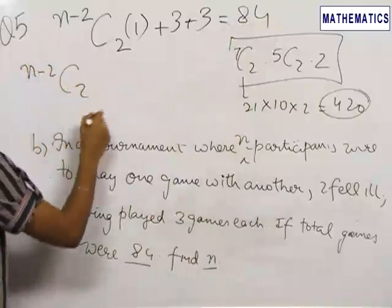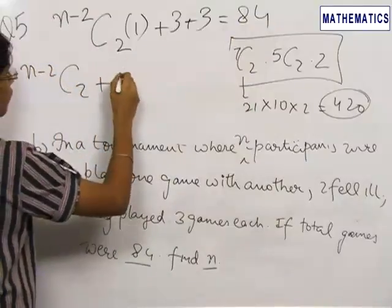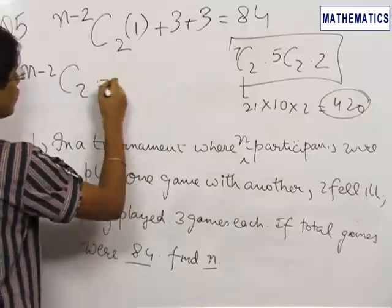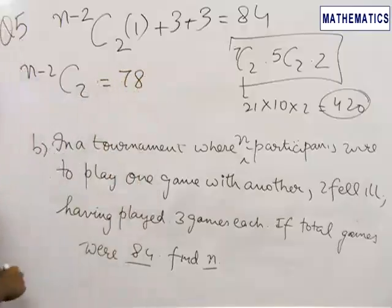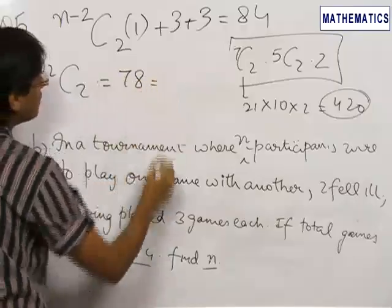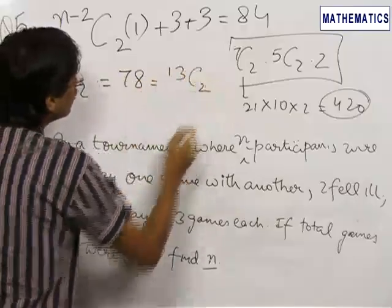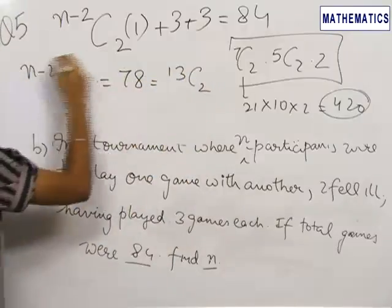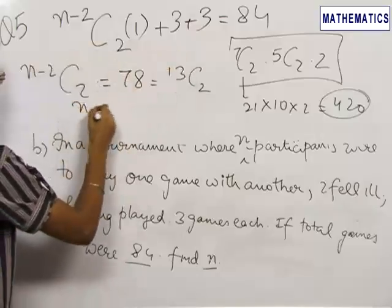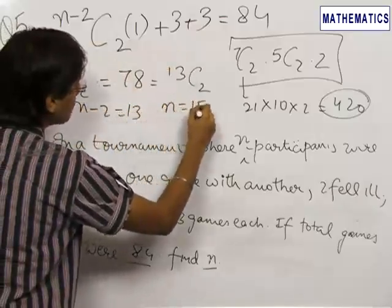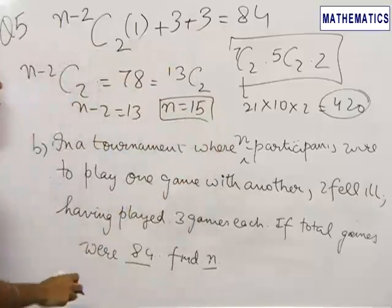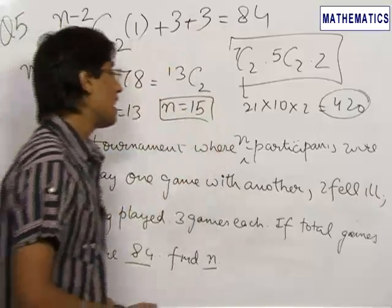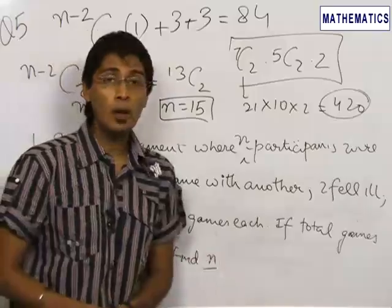So N minus 2 C2 plus 6 is equal to 84. So N minus 2 C2 is equal to 78 and we know that the value of 78 is 13C2. So on comparing these two, we get N minus 2 is equal to 13 or N is equal to 15 and hence, there were 15 participants playing at the beginning of the tournament.